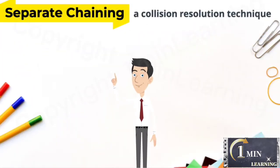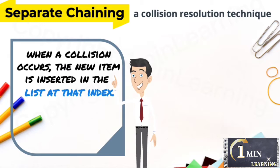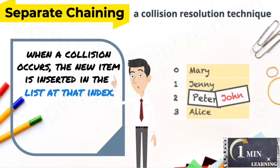Separate chaining is a collision resolution technique. When a collision occurs, the new item is inserted in the list at that index.